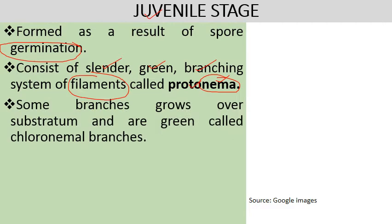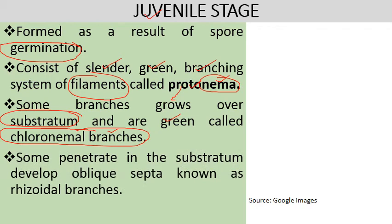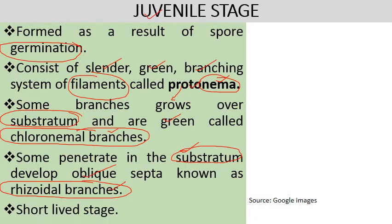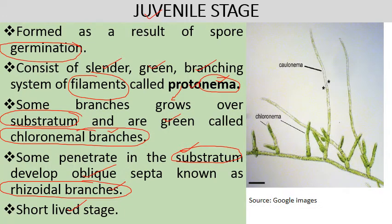There are some branches of this protonema which grow over the substratum. These are green in color and are commonly known as chloronemal branches because they contain chloronemal cells. There are also some protonema branches which penetrate the substratum — they are pale in color, develop oblique septa, and form the rhizoidal branches. This juvenile stage is an ephemeral stage, meaning it is a short-lived stage. These pale-colored branches that penetrate the substratum are known as rhizoidal branches.